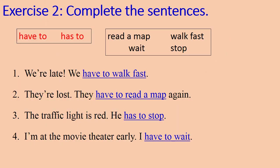This is my answer. Two: they're lost. They have to read a map again. Three: the traffic light is red. He has to stop. Four: I'm at the movie theater early. I have to wait. Now look at your paper and correct your work.